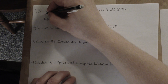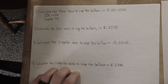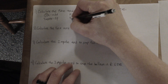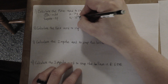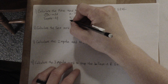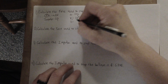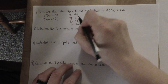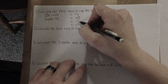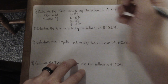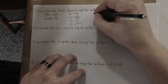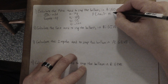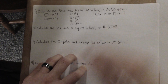We want to calculate the force used to stop the balloon with no give. What do we know from the problem? The mass of the balloon is one kilogram. Its initial velocity is 10 meters per second. Its final velocity is 0, because it's stopped. And because there's no give, the contact time is 0.1 seconds.